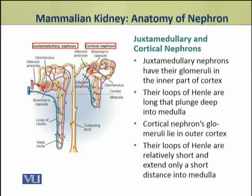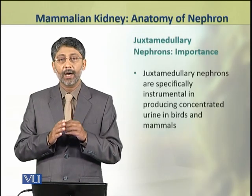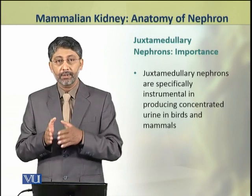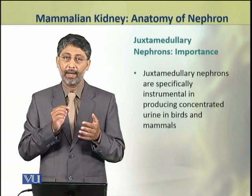There are two types of nephrons: cortical nephrons and juxtamedullary nephrons. Juxtamedullary nephrons have their glomeruli in the inner part of the cortex, and their loops of Henle are long, plunging deep into the medulla. Cortical nephrons have their glomeruli in the outer cortex, and their loops of Henle are relatively short, extending only a short distance into the medulla. Juxtamedullary nephrons are important for producing concentrated urine in birds and mammals.